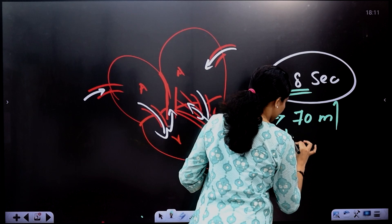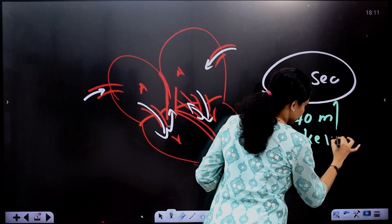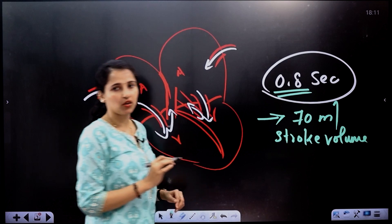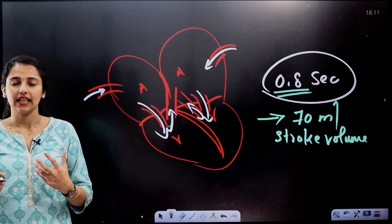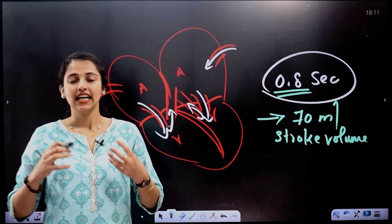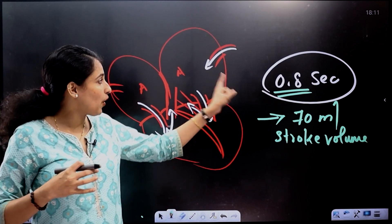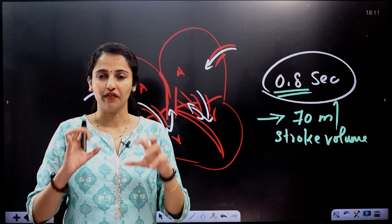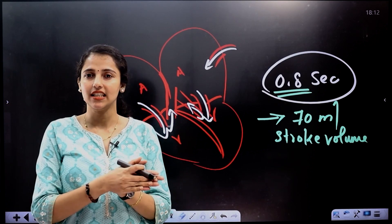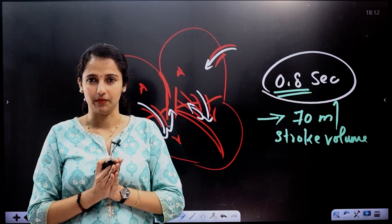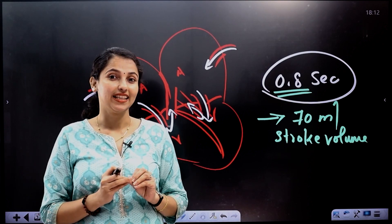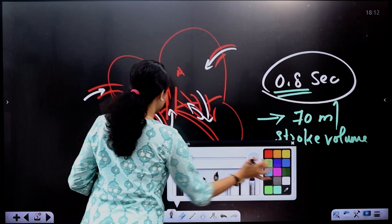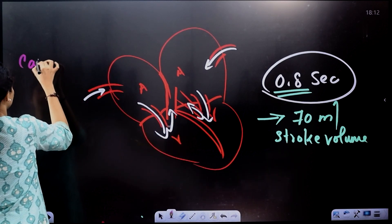How much blood does the ventricle pump? That is called the stroke volume. Stroke volume is how much blood the ventricle pumps in a single cardiac cycle — in 0.8 seconds. That is stroke volume.